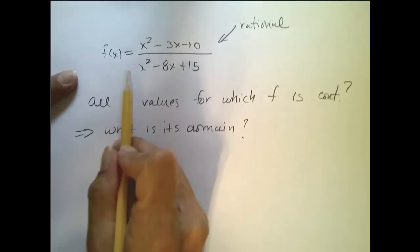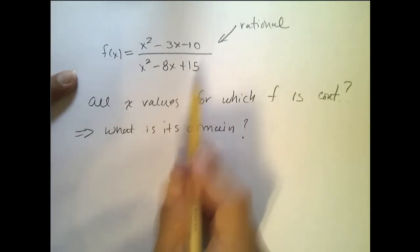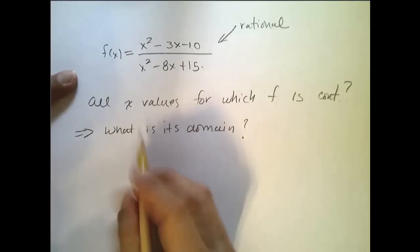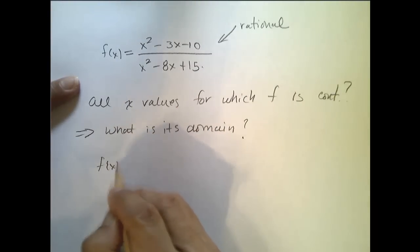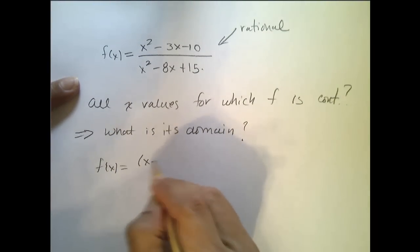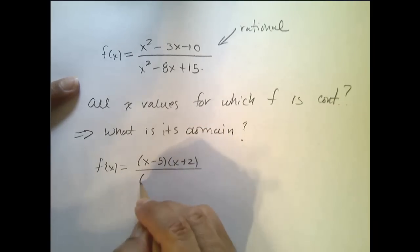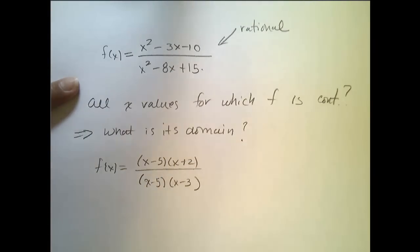Because it's continuous everywhere on its domain. And remember, with a rational function, the way I find its domain is I find the zeros of the denominator and I throw them out. So let's factor both top and bottom. The top factors to x minus 5 times x plus 2, which you can easily verify. And the bottom factors to x minus 5 times x minus 3.